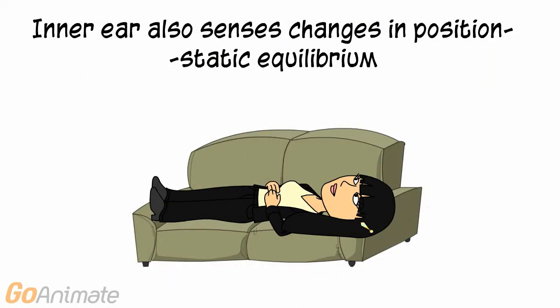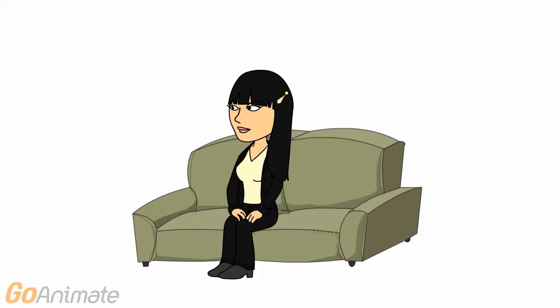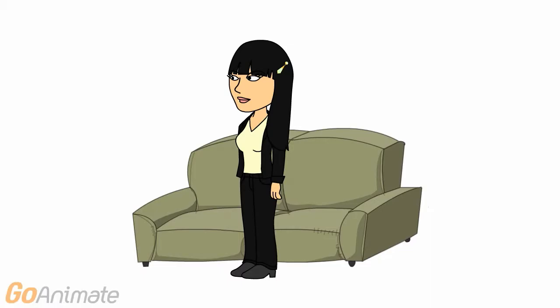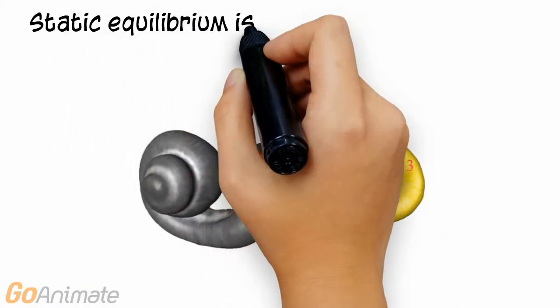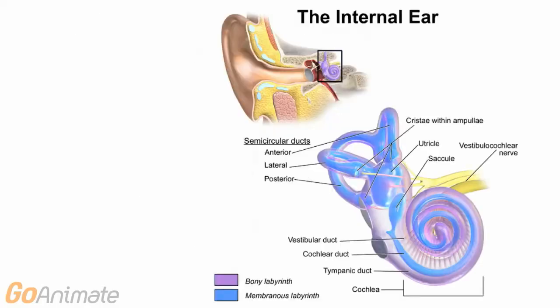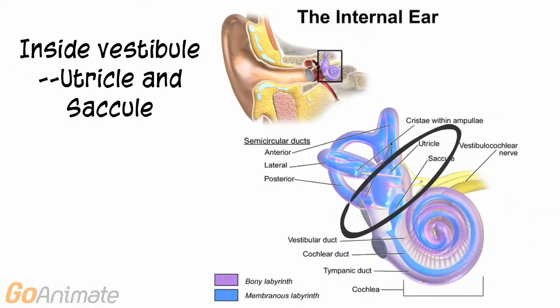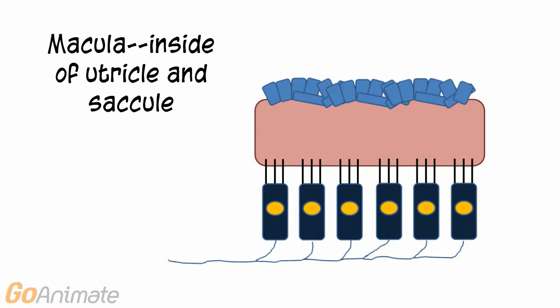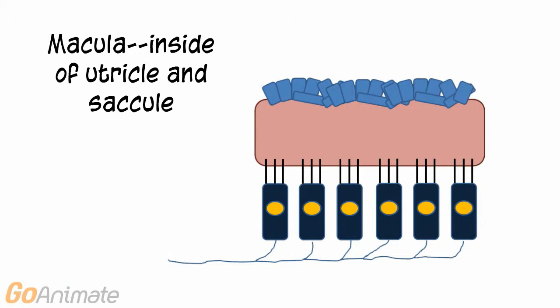The inner ear also senses changes in position, known as static equilibrium. Static equilibrium is sensed in the vestibule. Inside of the vestibule are two areas called the utricle and saccule. Both of these areas contain a macula.